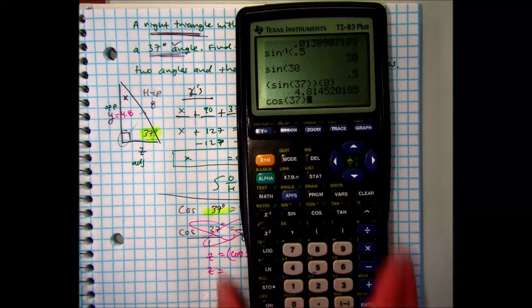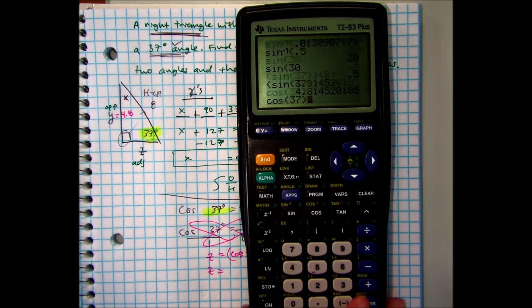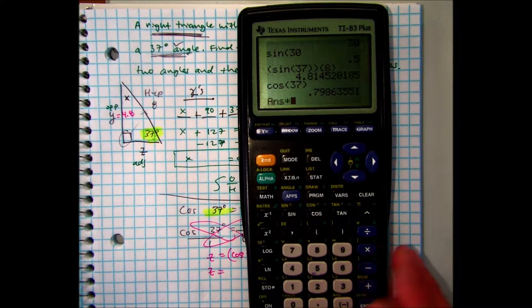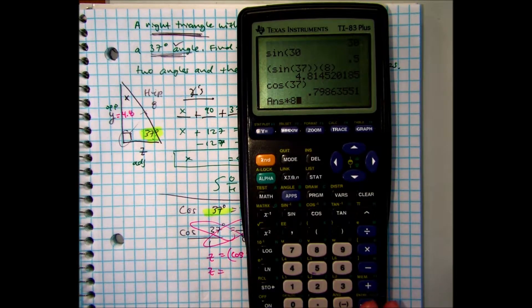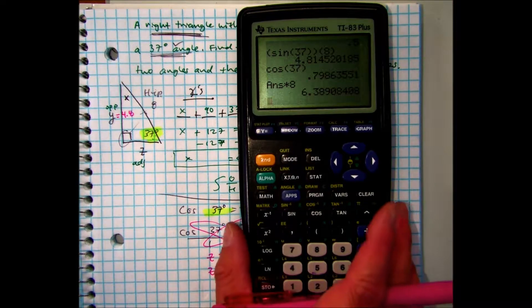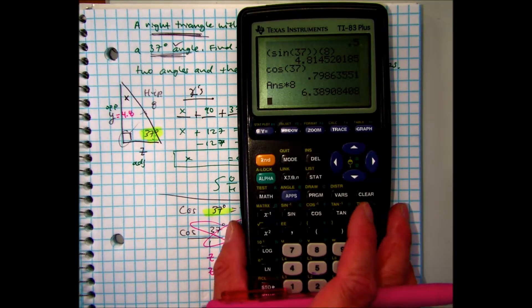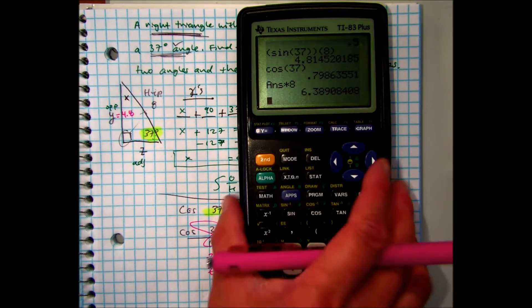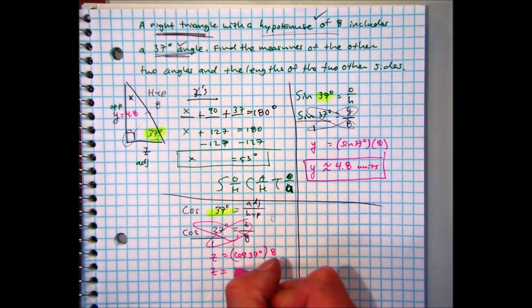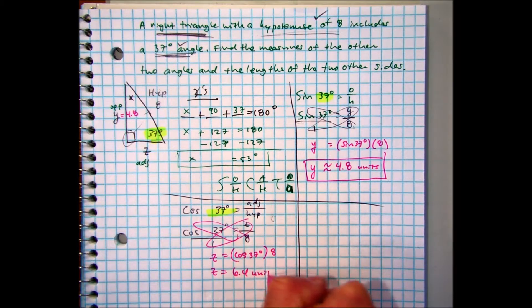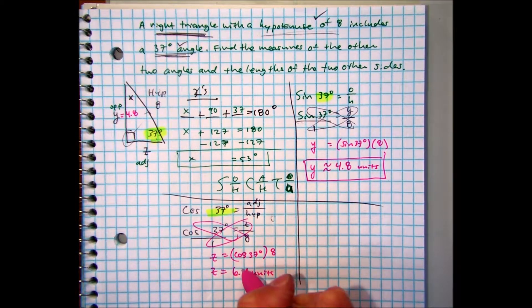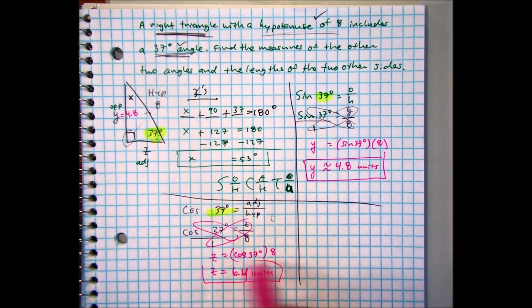z equals cosine of 37 times 8. Let's put that in our calculator. There's another way of putting it into your calculator. You're supposed to put cosine of 37, press enter, and don't touch it. Press multiply by 8, times 8. So the answer times 8. And if you round to the nearest tenth, that'll be approximately what? 6.4.